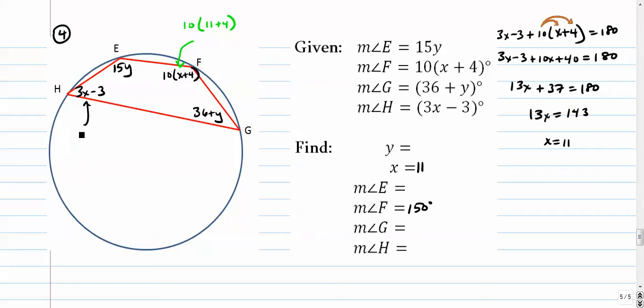Right here we have 11. 3 times 11 is 33. Minus 3 is 30. That checks out. 150 plus 30 is, of course, 180.